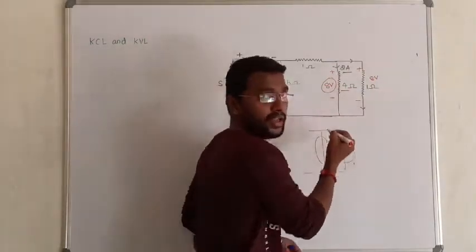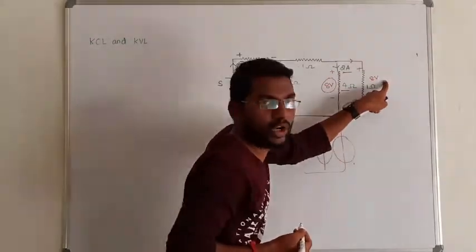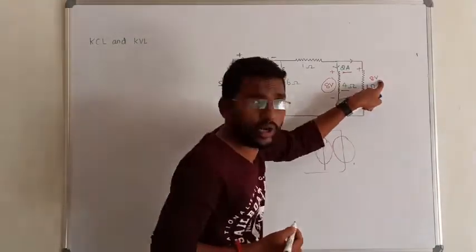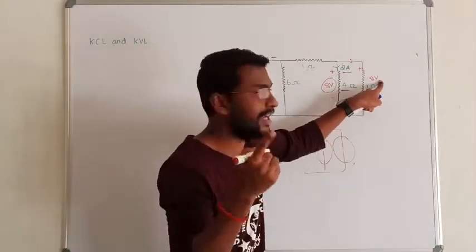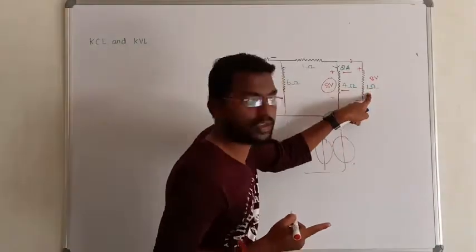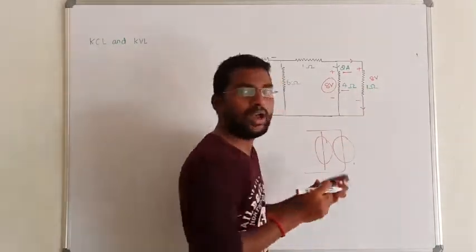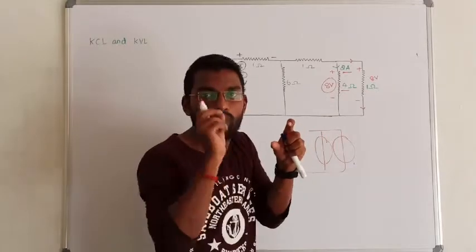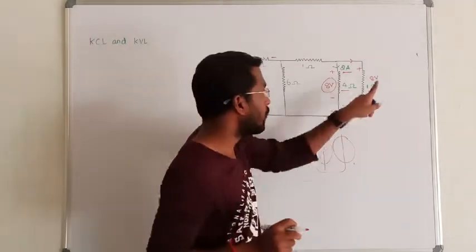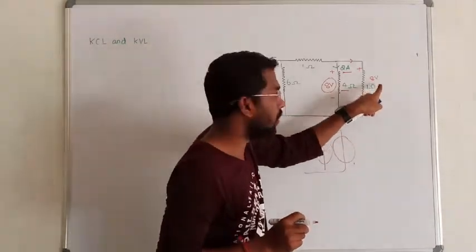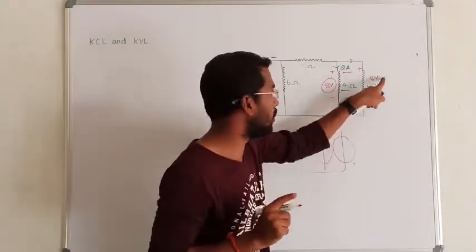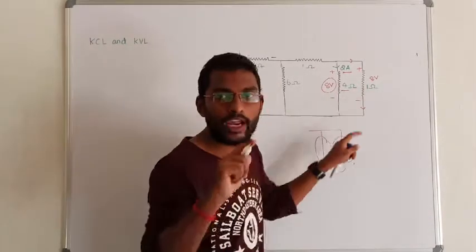The same voltage must appear across both edges. This resistance is 1 ohm. According to Ohm's law, I equals V by R. V is 8 volts, R is 1 ohm. So 8 divided by 1 is 8A.